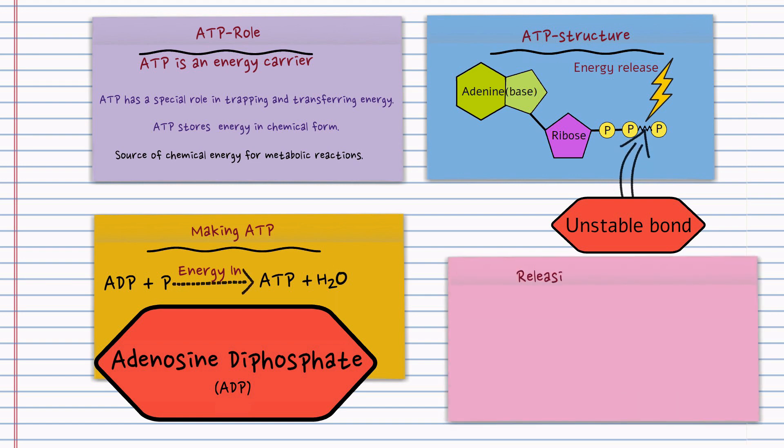So how is energy released from ATP? It's all to do with breaking that unstable bond. When you break that bond, you release the energy. So you start off with adenosine triphosphate. You add a water molecule and this results in that bond being broken. So you're left with adenosine diphosphate, that phosphate on its own, and the energy being released.